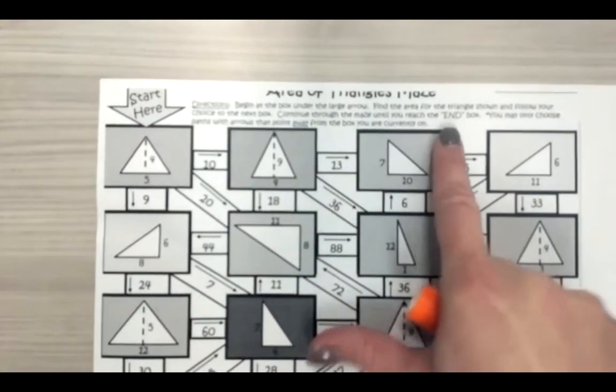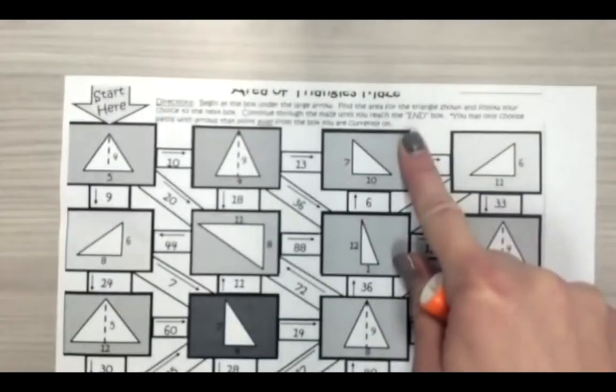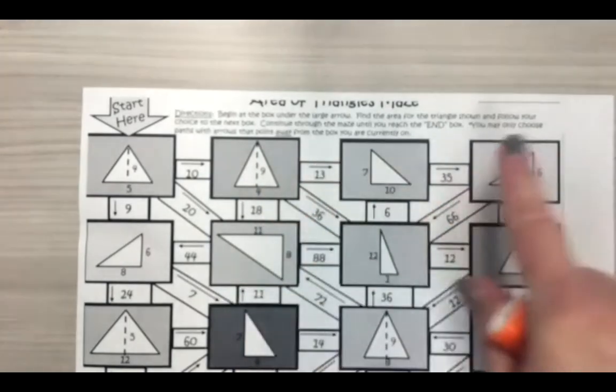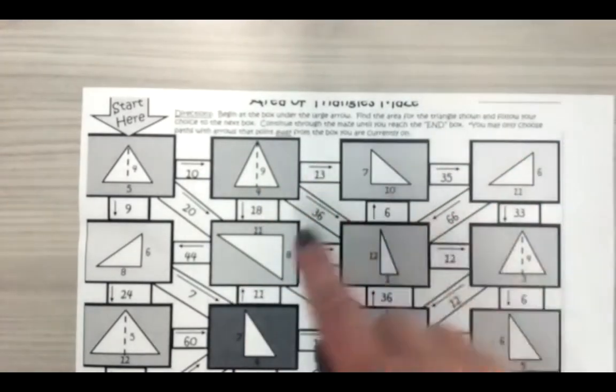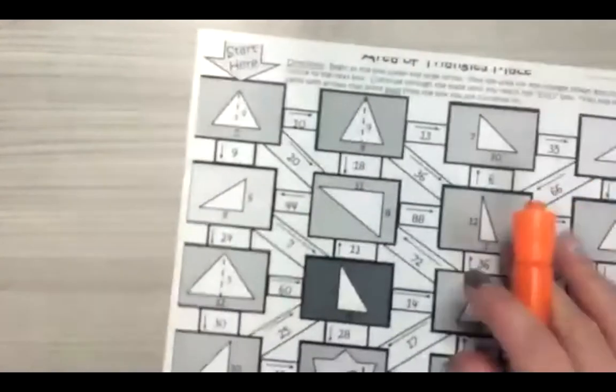Continue through the maze until you reach the end box down here. The end box. You may only choose paths with arrow that point away from the box you are currently on. Okay. That makes sense because you're going away from the box. Let's go ahead and do this.